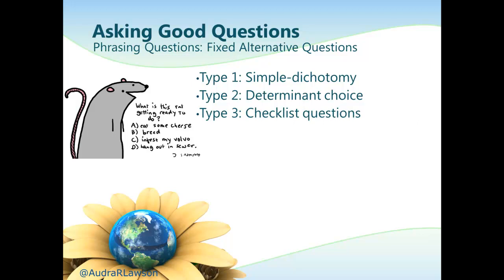Third are checklist questions, which allow respondents to provide multiple answers to a single question by checking off different items — useful for asking about behaviors or products purchased, as long as no two responses contradict each other. Fourth, and probably most common, are scale questions, which ask people the strength of their beliefs — for example, agree or disagree — or the frequency with which a respondent performs a behavior, such as how often they play World of Warcraft on a scale of three to six times a week down to never.